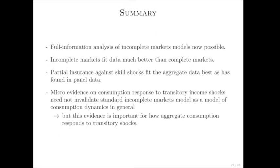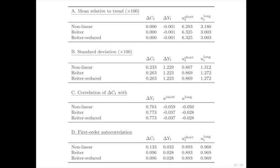To wrap up: we can now do this kind of full-information analysis of incomplete markets models using many of the tools of the DSGE literature. The incomplete markets assumption really makes for a better fit to aggregate data, slightly improved by allowing for partial insurance against skill shocks. Microeconomic evidence on the response of consumption to transitory income shocks may not be a reason to discard the incomplete markets model as a general model of consumption dynamics, but if you're interested specifically in how the economy responds to a transitory income shock, then the details of asset liquidity do matter.